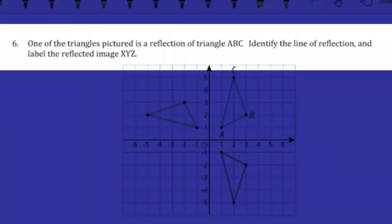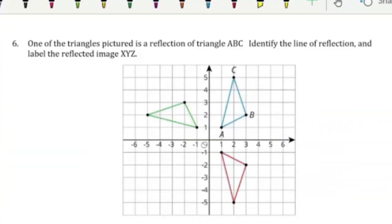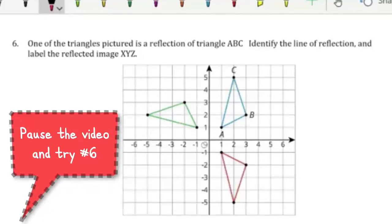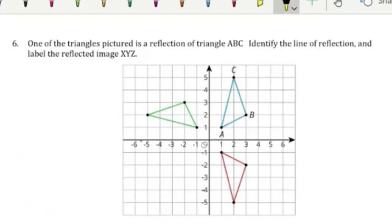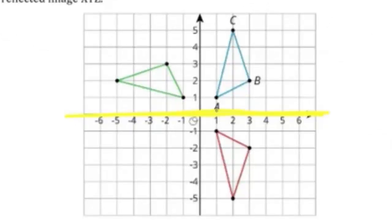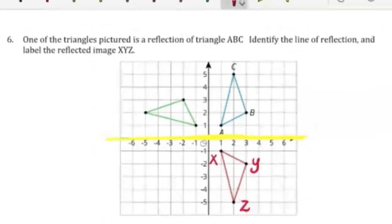Number six. One of the triangles pictured is a reflection of triangle ABC. Identify the line of reflection and label the reflected image XYZ. The reflected triangle is the red one, and it's reflected over the x-axis. Point A is one unit away from the x-axis, and point X is also one unit away. Point B is two units away, and point Y is also two units. Point C is five units away, and its reflected point Z is also five units away.